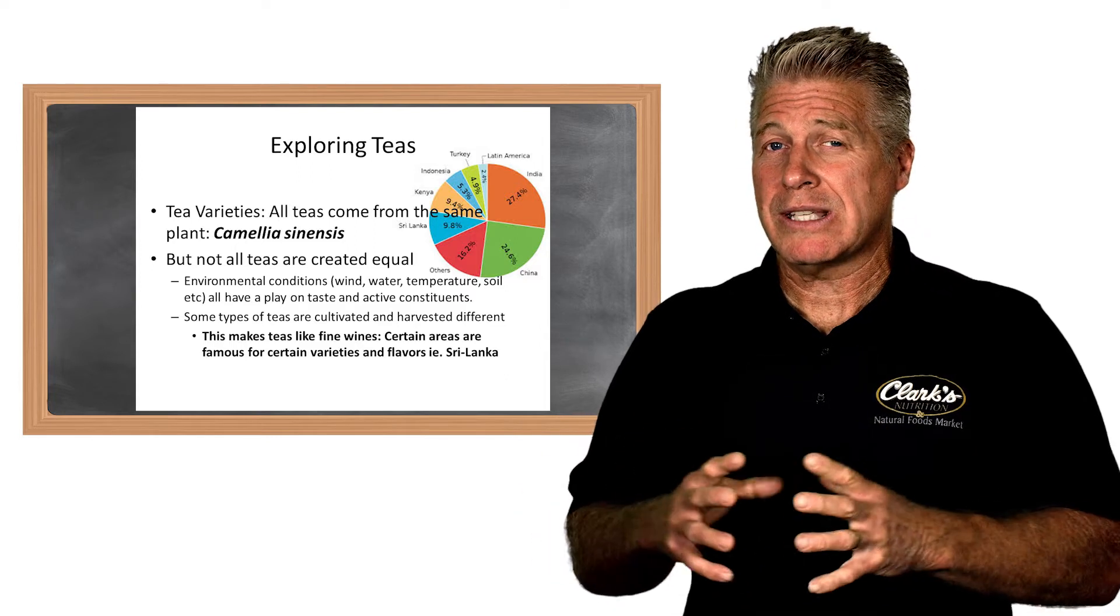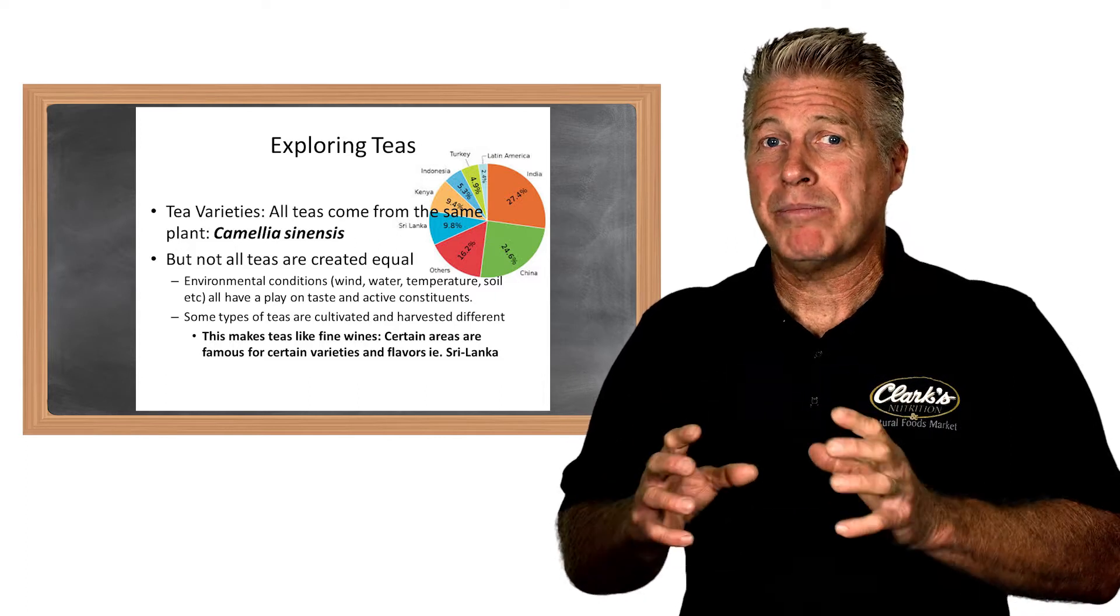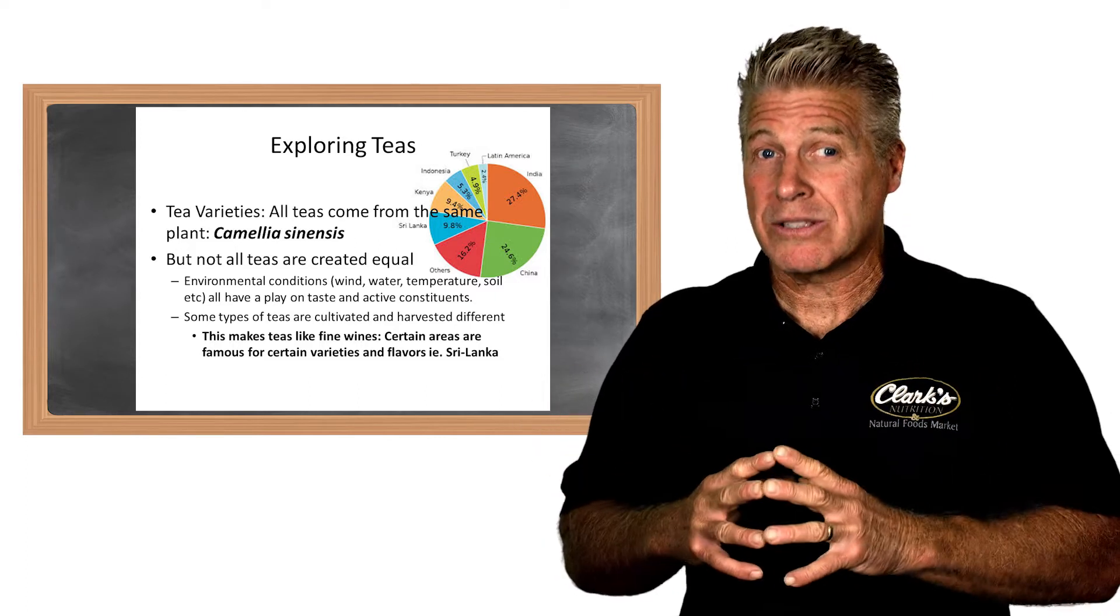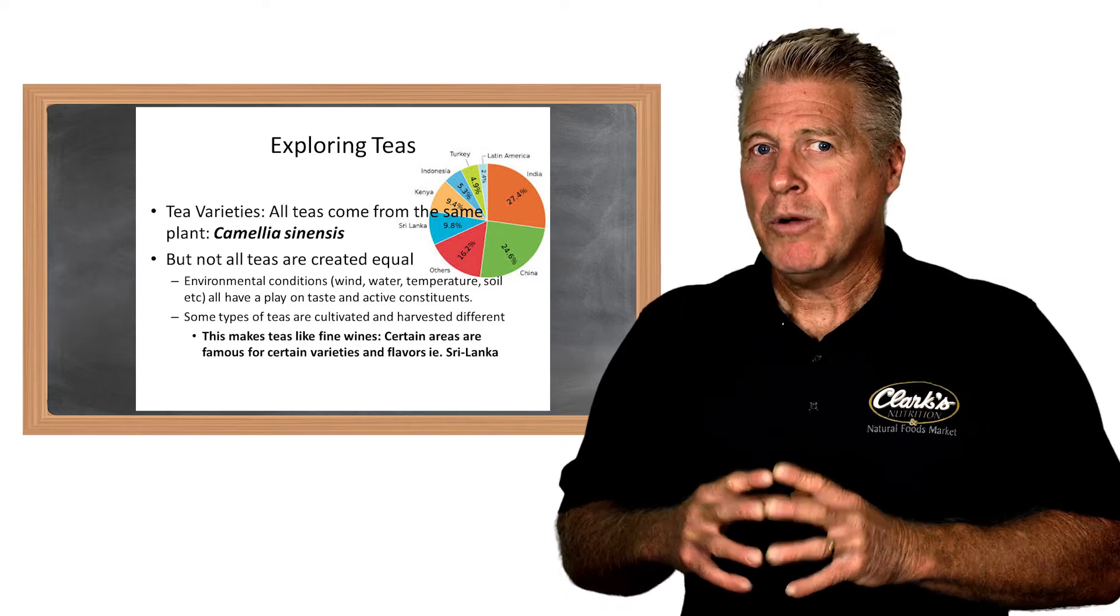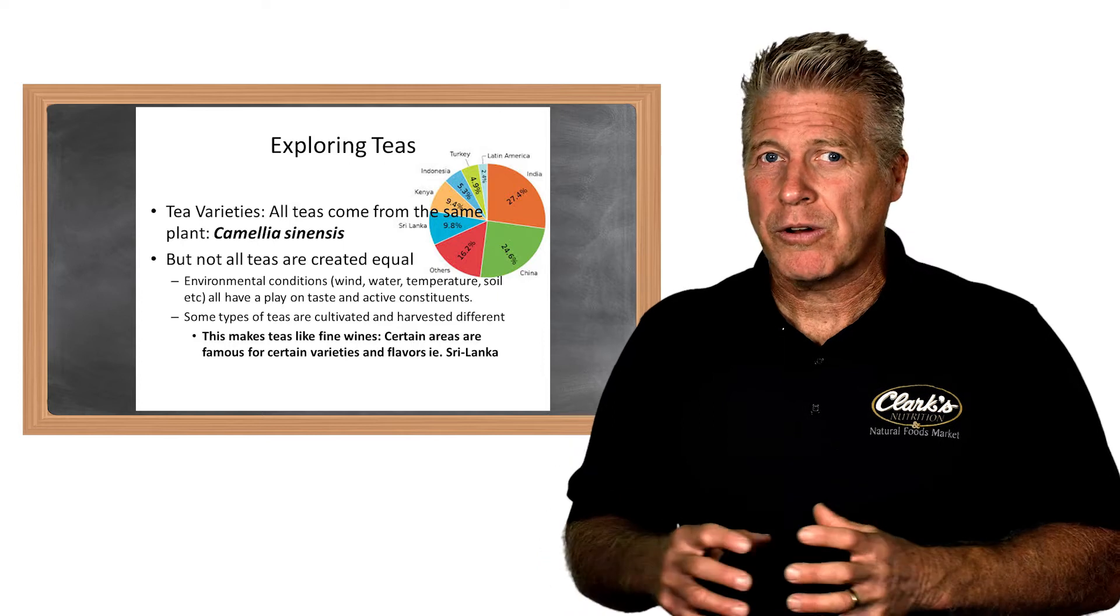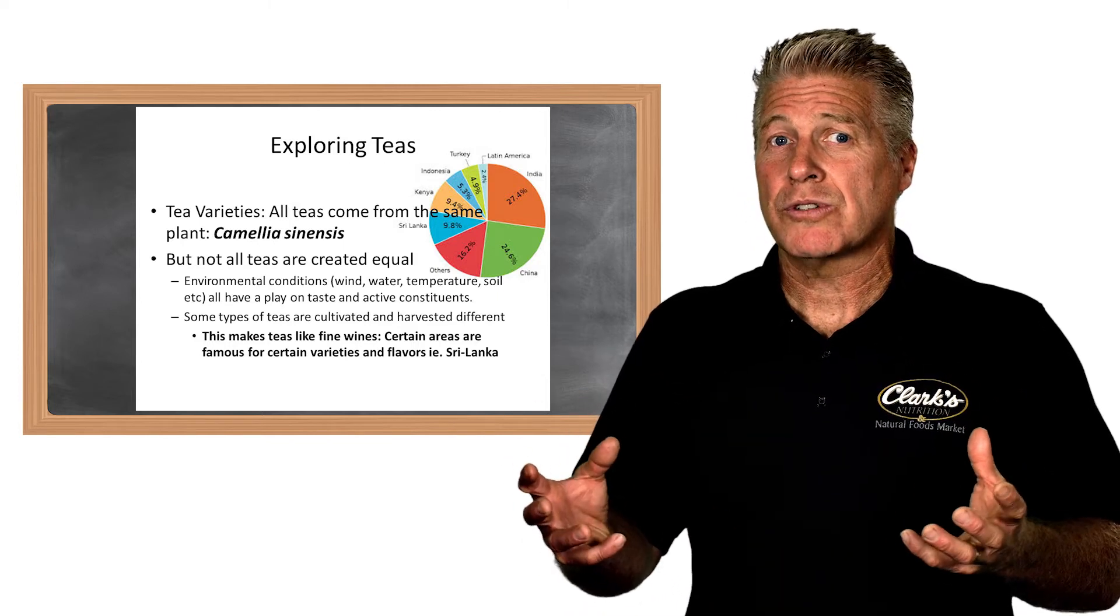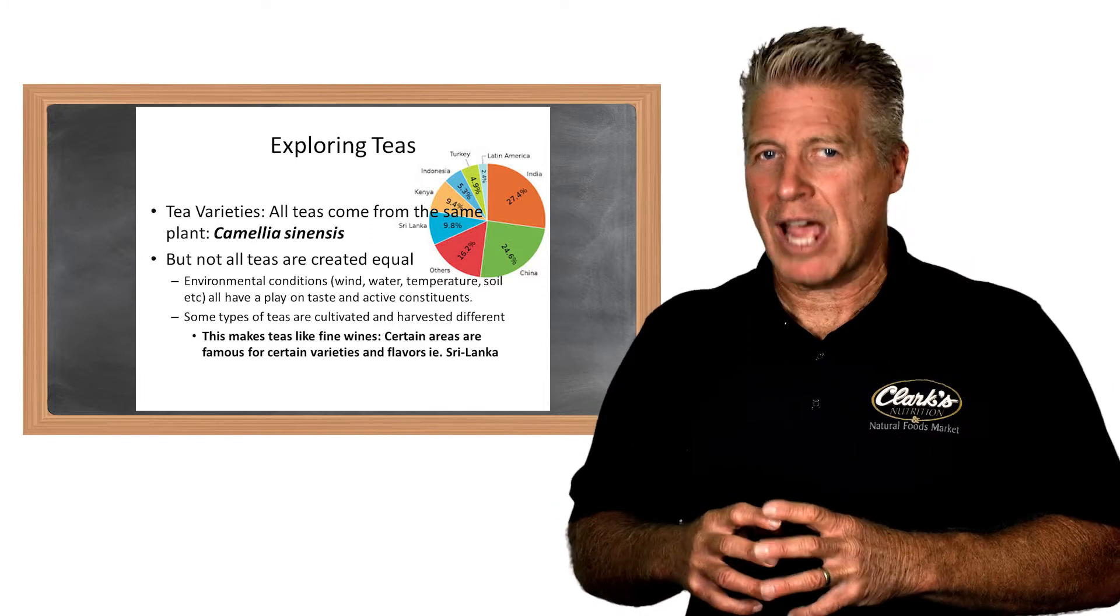What we notice is there are different types of teas being from the same exact type of plant, called the Camellia sinensis. When it grows in different areas, different topography, different types of weather, different soil conditions, and when it comes to processing, we have different types of teas.